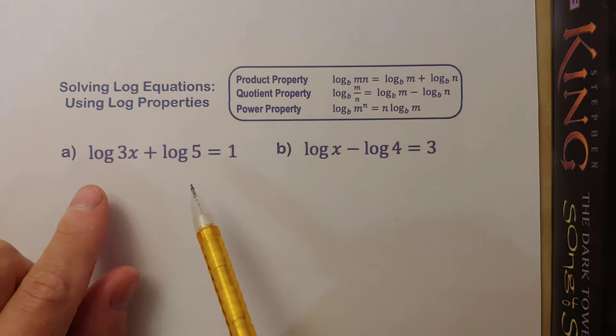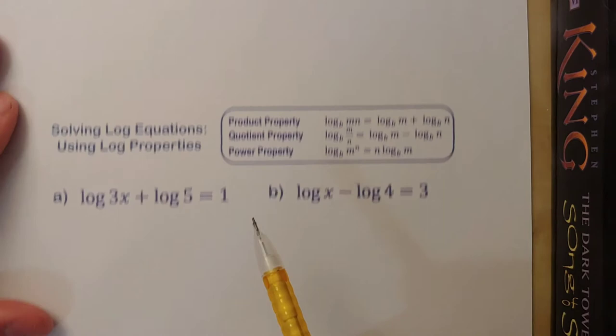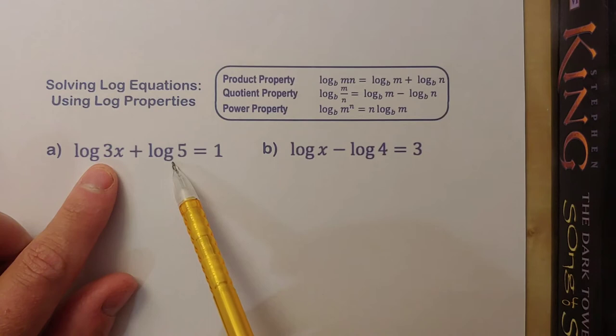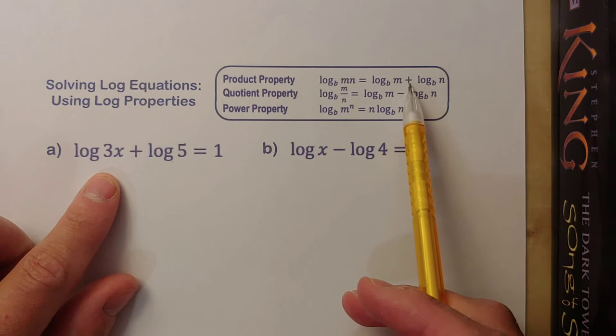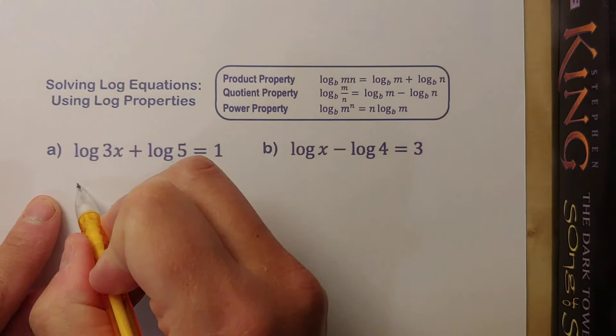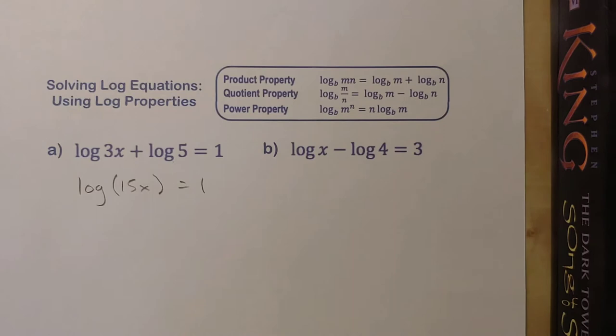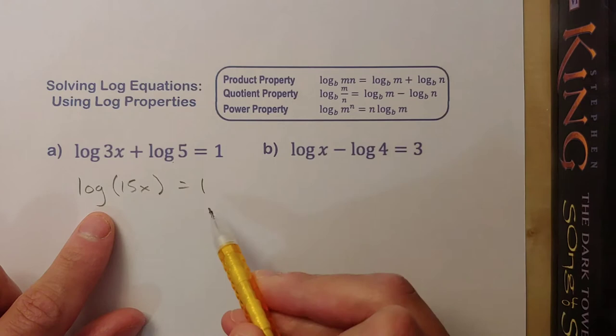Now if I could somehow combine these two logs together, I would have a problem that looked a lot like these three that we did up here, and then I could just convert to exponential form. We're adding two logs and they have the same base, base 10, that means we can use the product property. I can go backwards from the expanded form back to a single log. Let's rewrite this as log base 10 of 3x times 5, well that's 15x.